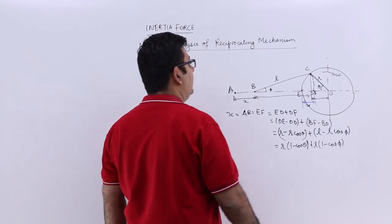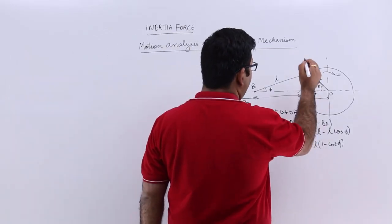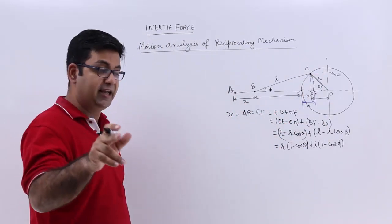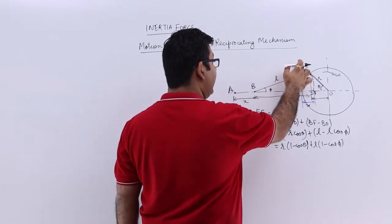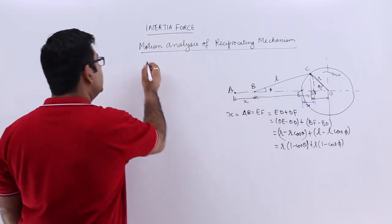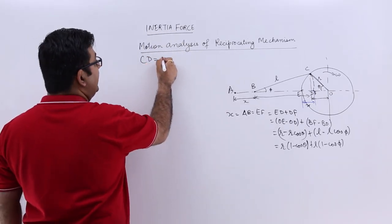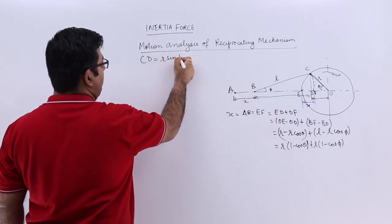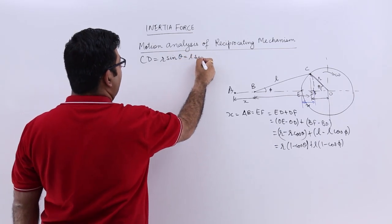Let's look at the line CD. CD is common to BCD and ODC. So CD can be written as R sin theta and this will be also equal to L sin phi.